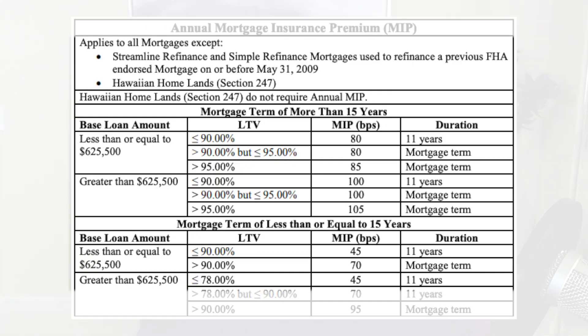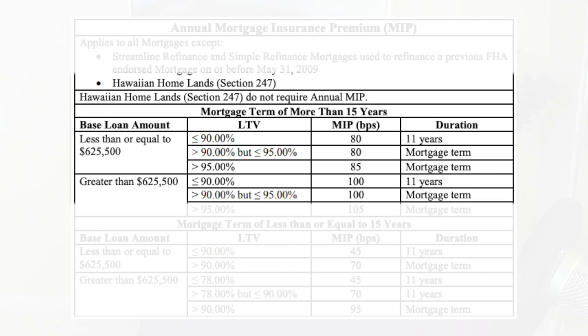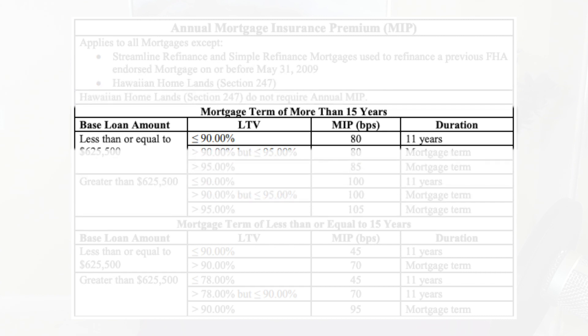If we go back to the FHA chart with 20% down on a 30-year fixed, the mortgage insurance is a little bit lower and the duration is only 11 years. So there are benefits to putting additional money down on an FHA loan, both in terms of cost and the length of time you have to pay mortgage insurance. But if you have 20% down and qualify for conventional financing, conventional is the best bet because you can avoid mortgage insurance completely.